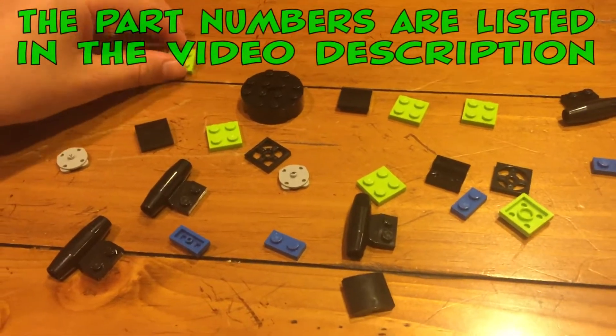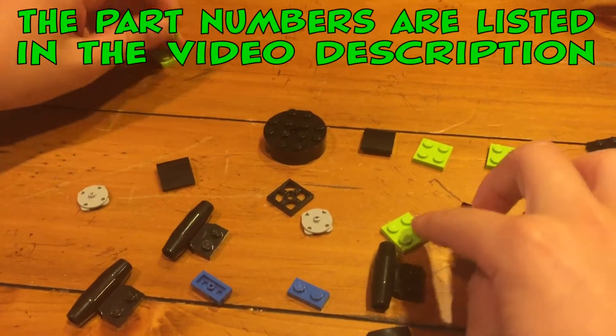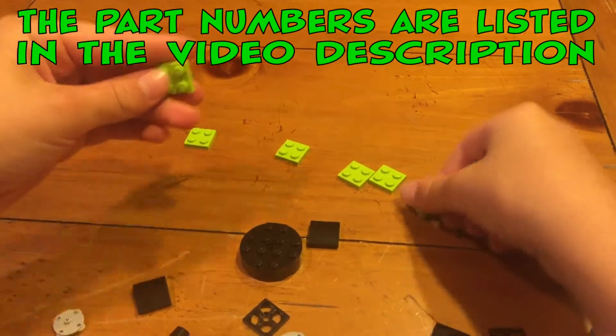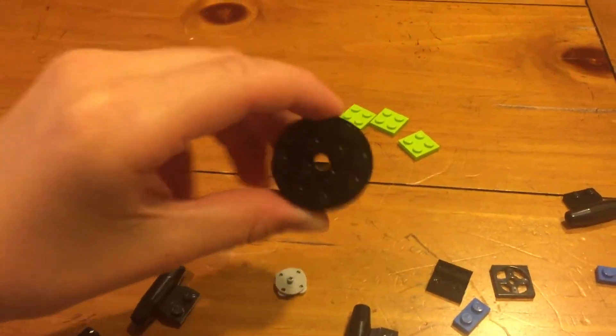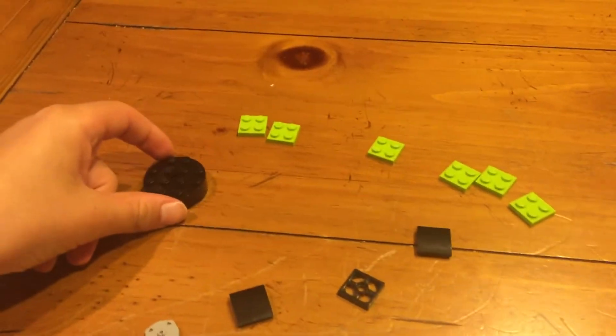23 pieces. You need one, two, three, four. Six of these square things. Got it. Two by one, whatever you call those. One of these things. You don't have to show them all. I'm going to list all the parts. Show them how you build them.